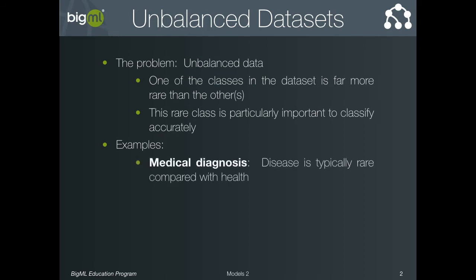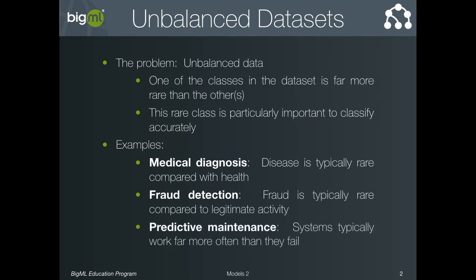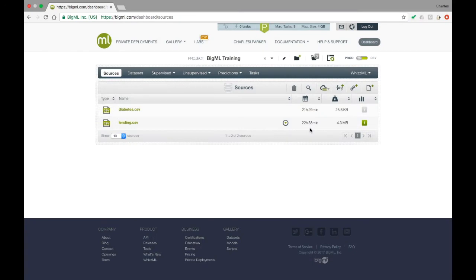In medical diagnosis, there are far fewer people who have some disease than those that do not. When detecting credit card fraud, fraudulent transactions are far more rare than legitimate ones, and so on. The remedy for this problem is to explicitly tell the algorithm to give the classes equal weight rather than using their prevalence in the data to determine their importance.